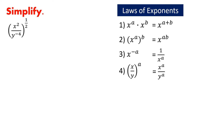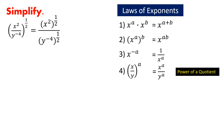The first thing we want to do is to look at the expression and see what our options are for how we could start. Which of the laws of exponents should we use? It looks like we could use the power of a quotient law. That means we would have this expression. Now, which of the laws of exponents should we use to simplify the numerator and denominator?